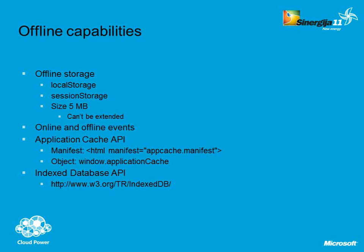Offline capabilities are very, very important — again for connected devices: smartphones, tablets, and so on. The typical usage of local storage and online/offline events is: imagine you're traveling, writing an email on some web page because you're connected using 3G or some wireless network in a train, and you lose the connection. You may not notice it. You push the send button and nothing happens — probably you lose your work.